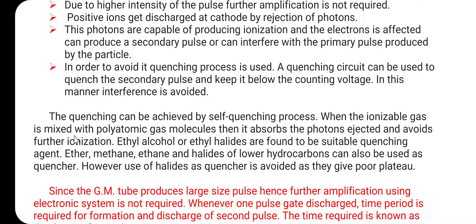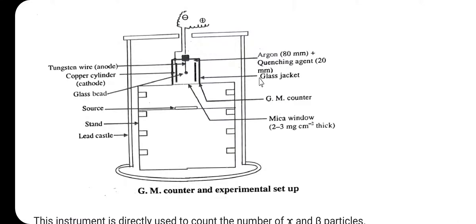Self-quenching is achieved when the ionizable gas is mixed with polyatomic gas molecules that absorb the ejected photons and avoid further ionization. Ethyl alcohol and ethyl halide are found to be suitable quenching agents. Ether, methane, ethane, and halides of lower hydrocarbons can also be used as quenchers; however, use of halides is avoided as they give a poor plateau. In the setup, argon serves as the ionizable gas and the quenching agent is at 20 mmHg.